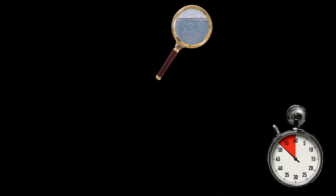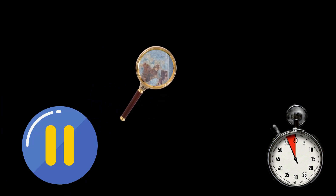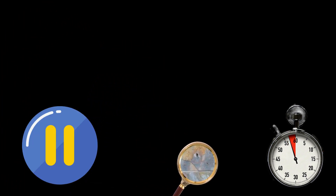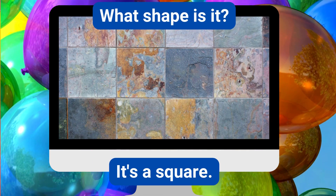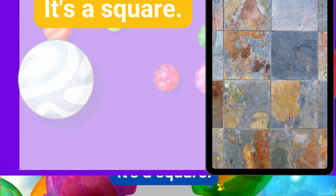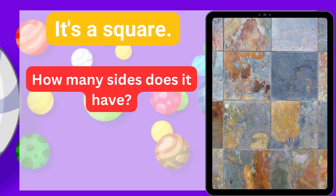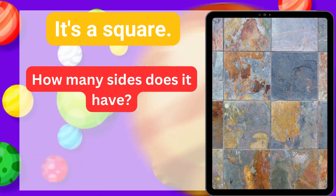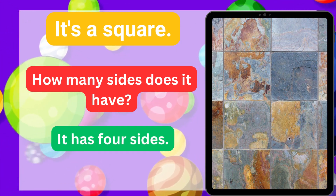What shape is it? It's a square. How many sides does it have? It has four sides.